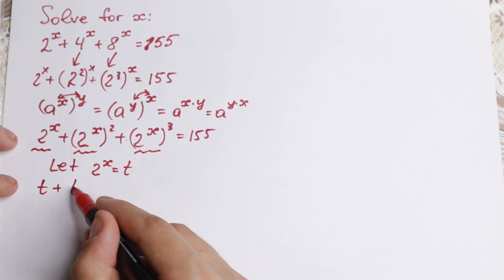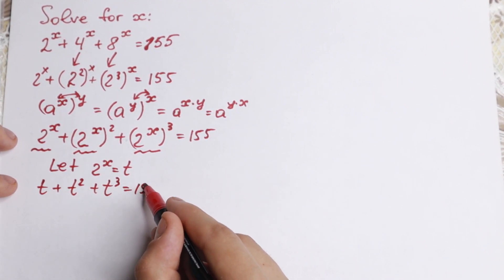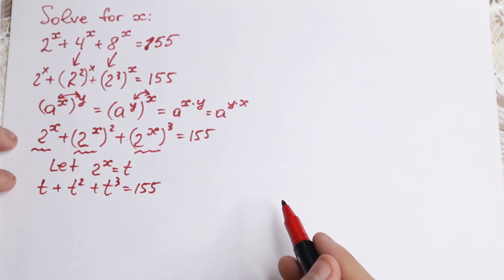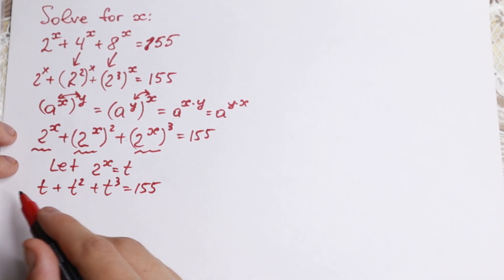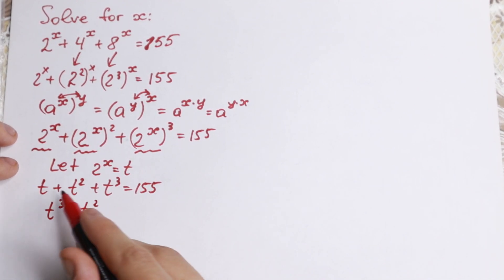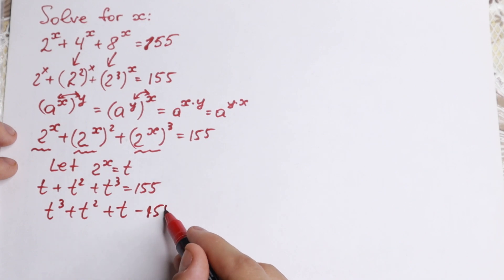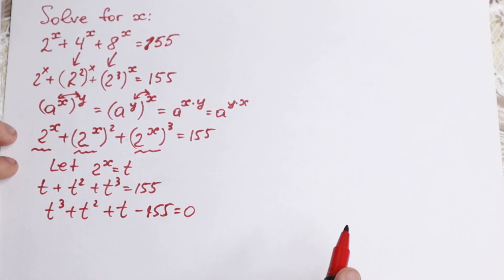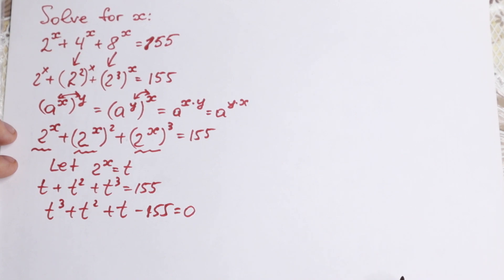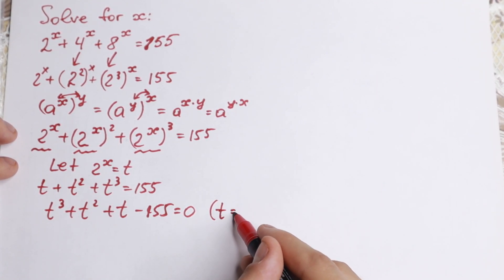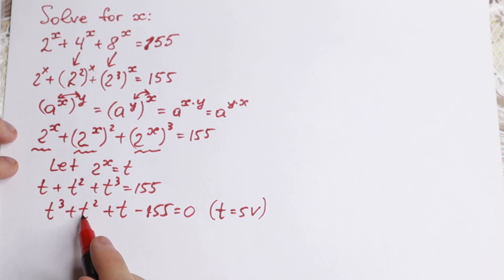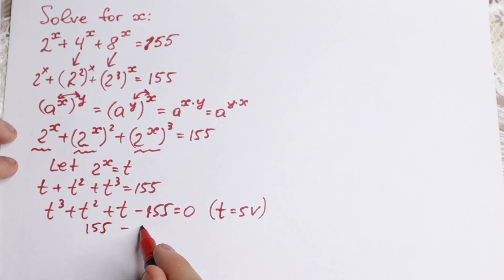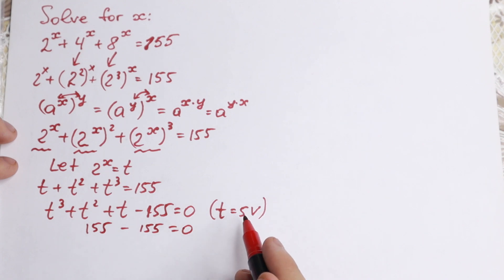With the substitution, we have t plus t squared plus t cubed equals 155. Rearranging, we get t cubed plus t squared plus t minus 155 equals 0. This is a cubic equation. Looking closely at the left-hand side, we can see that t equals 5 is a root, because 125 plus 25 plus 5 equals 155, making the expression zero.